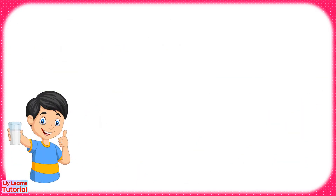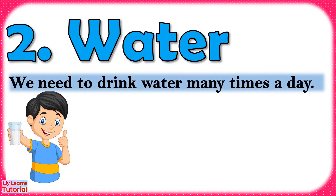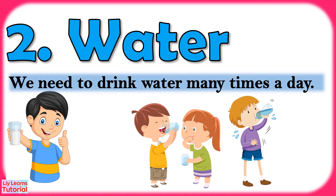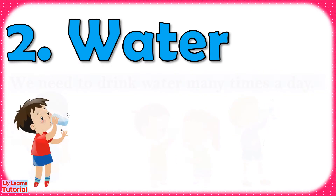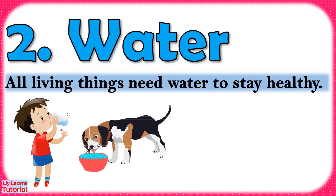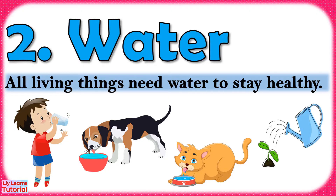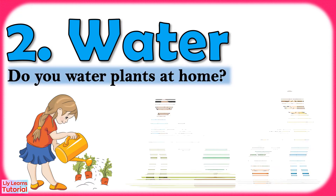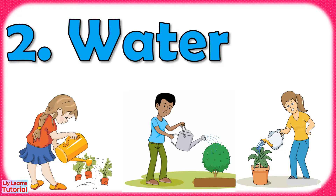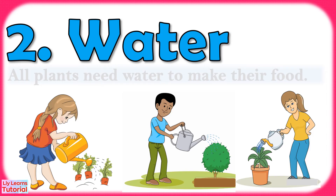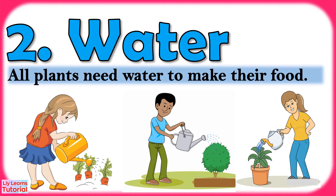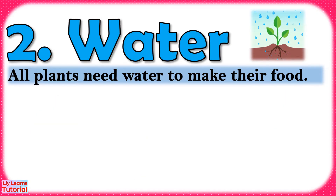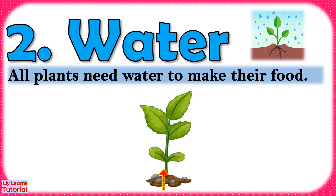Water to drink. We need to drink water many times a day. All living things need water to stay healthy. Plants also need water to make their food. Water enters the plants through its roots and then travels through tiny tubes in the stem to its upper part — that is, all the leaves and stems.